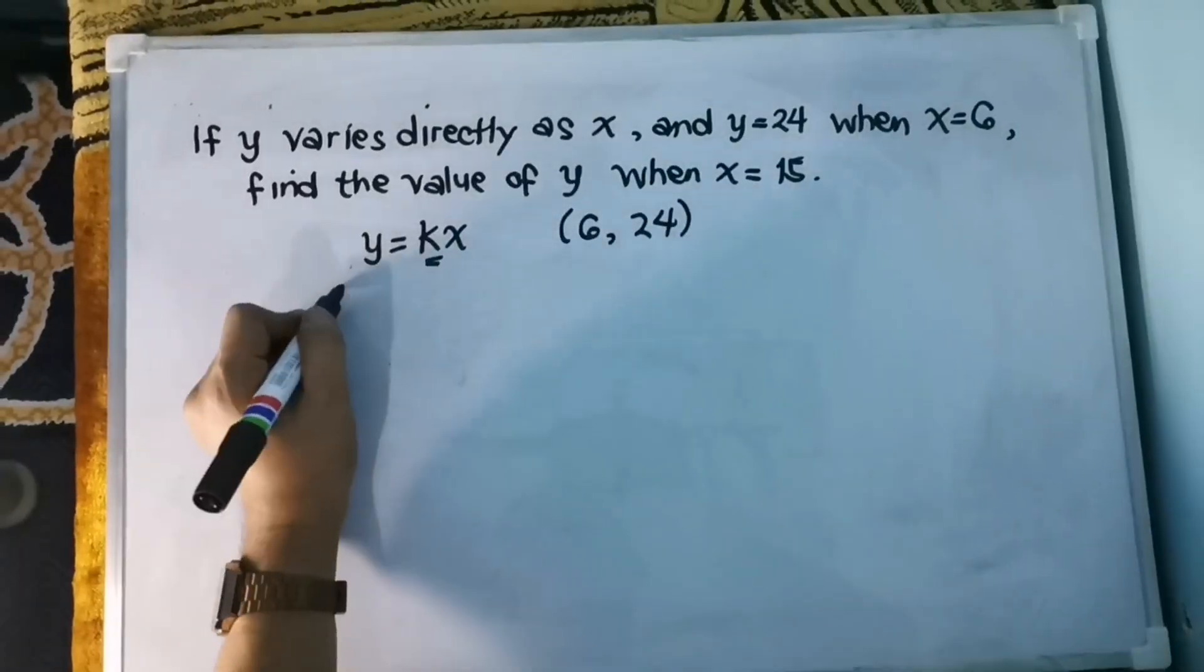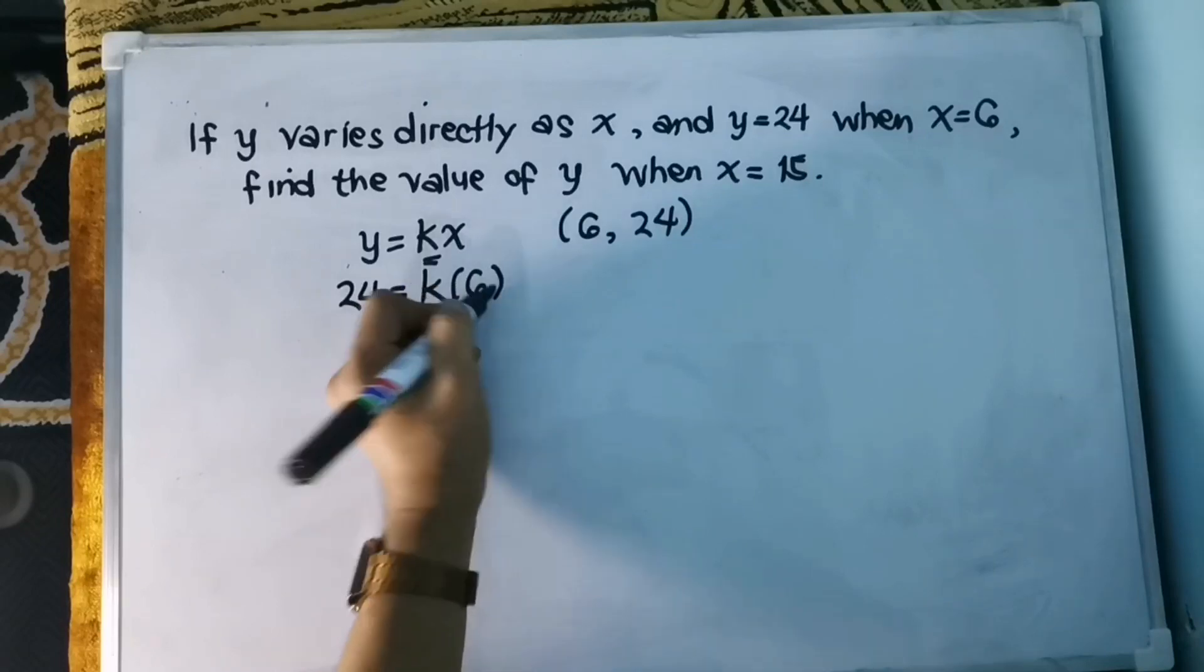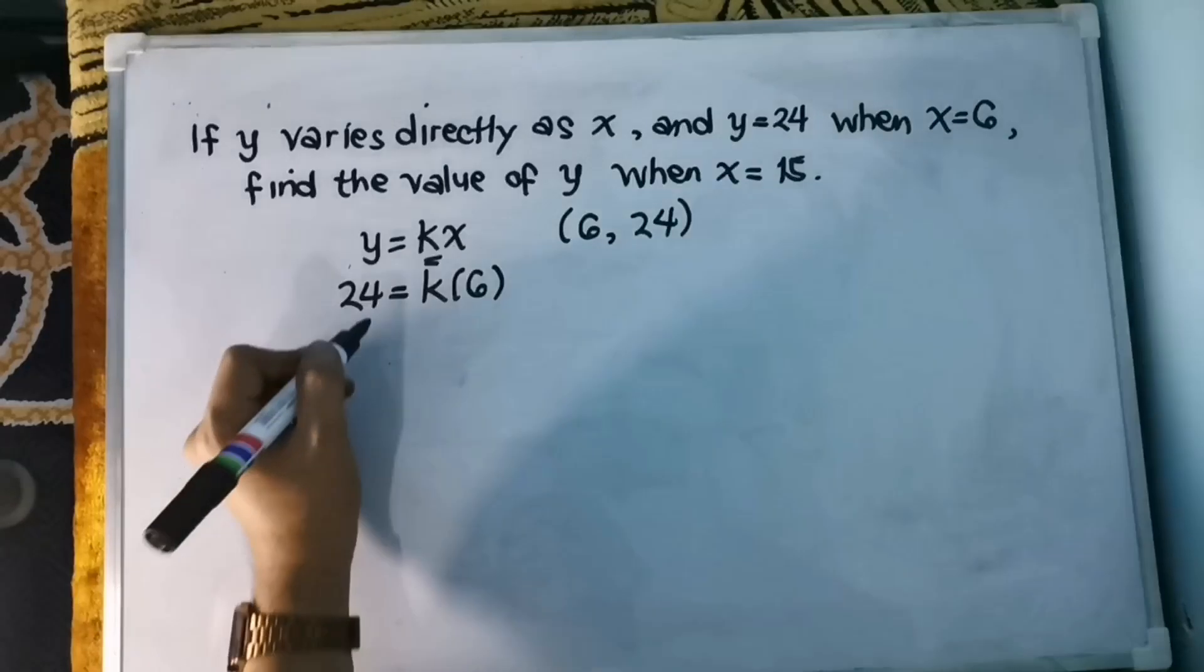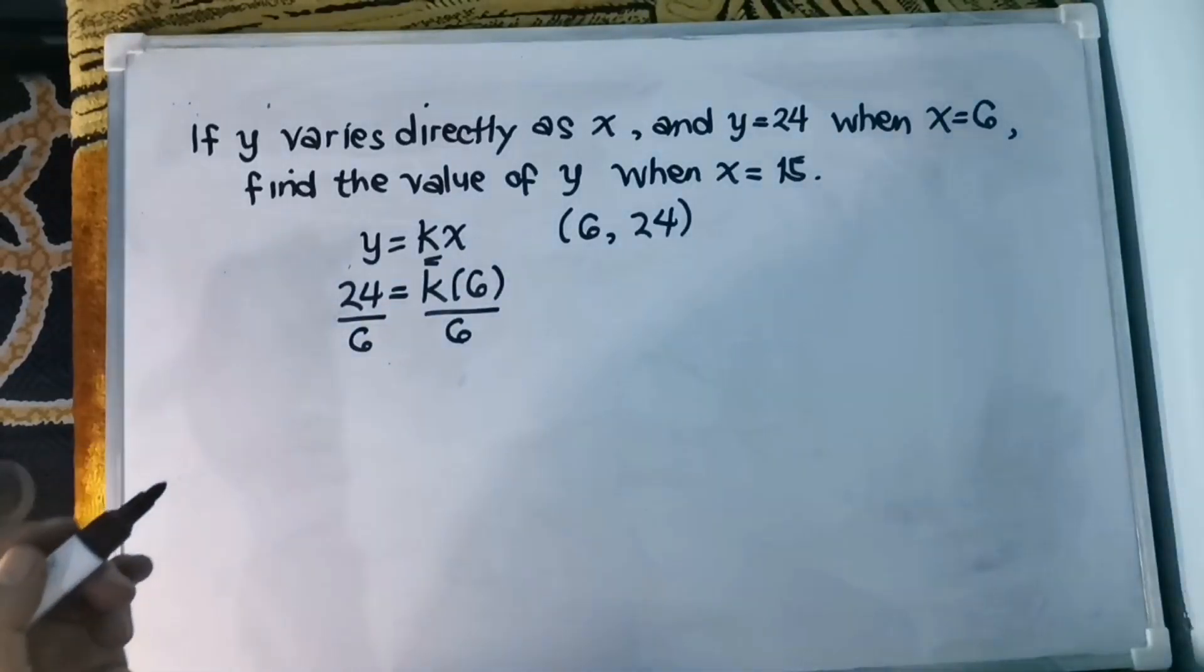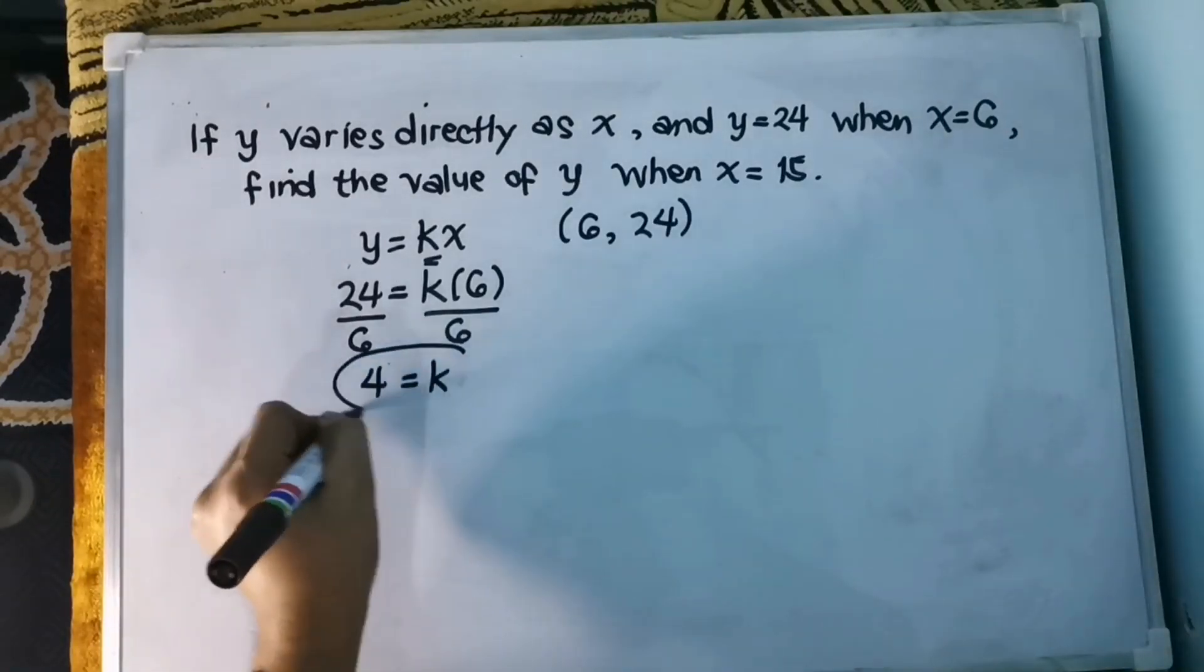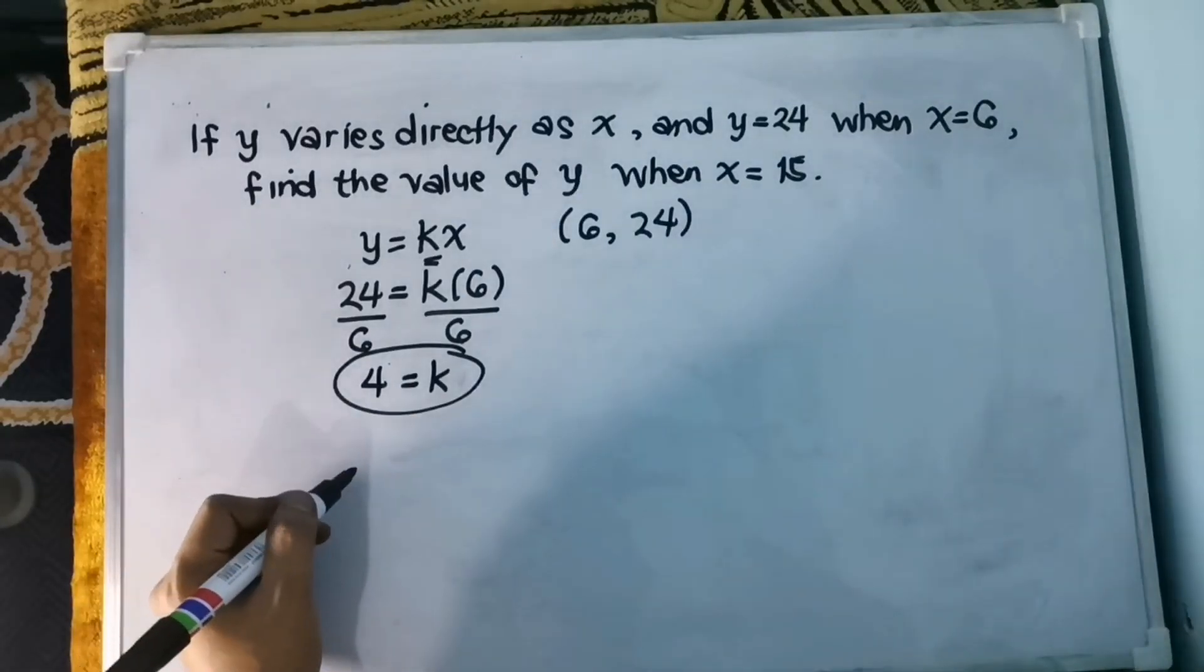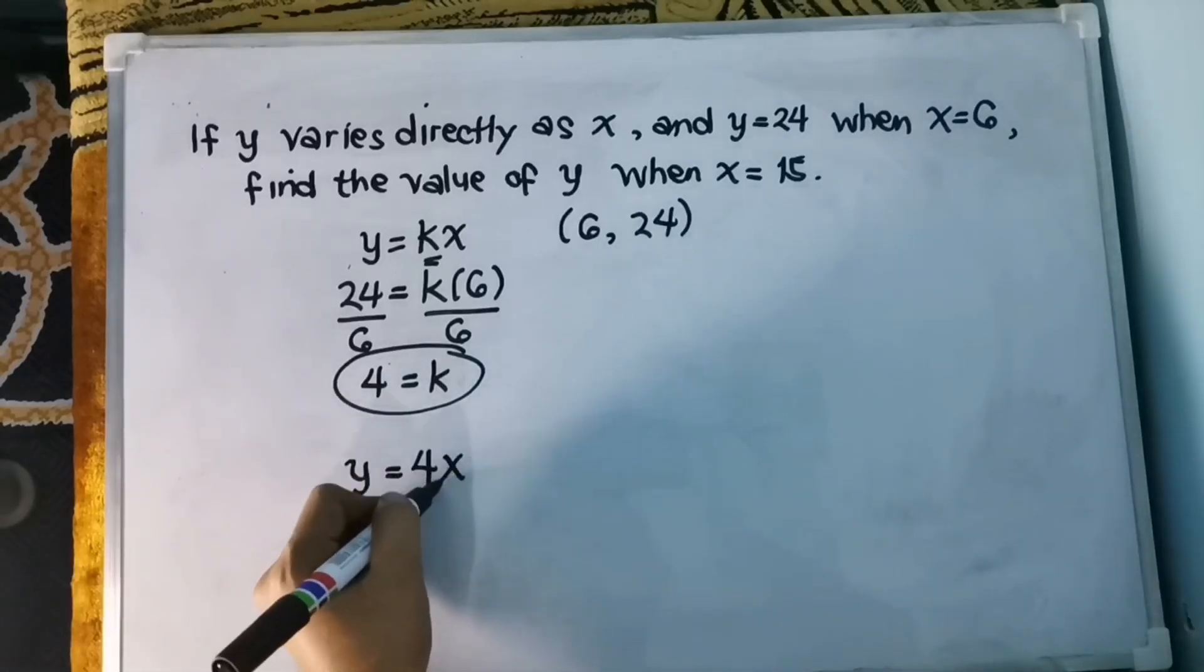Our y is 24 equals k times 6. And then applying the MPE or the multiplication property of equality, simply divide it by 6 or multiply it by one-sixth. Divide both sides by 6. 24 divided by 6 is 4. That will be the value of k. Therefore, the equation of variation is y equals k is 4x.